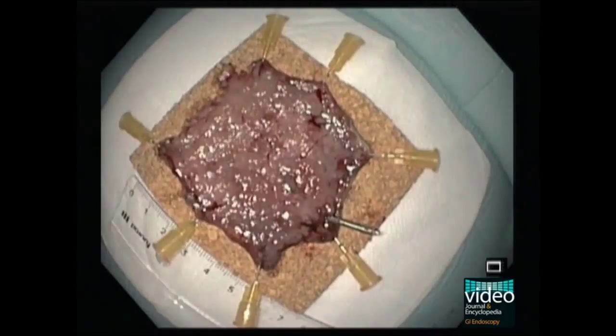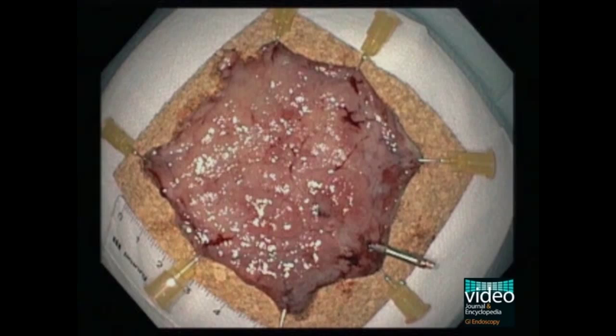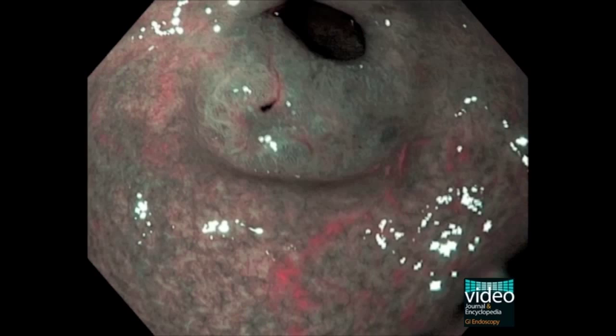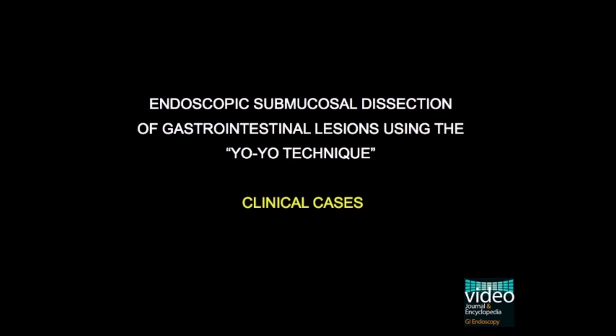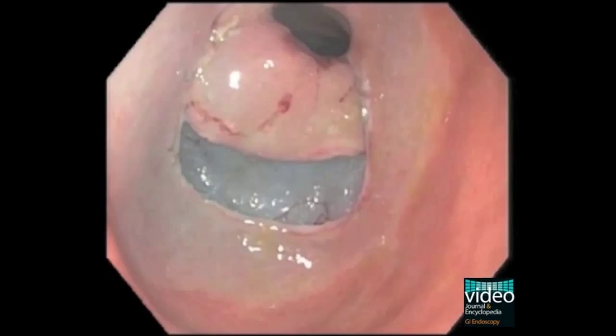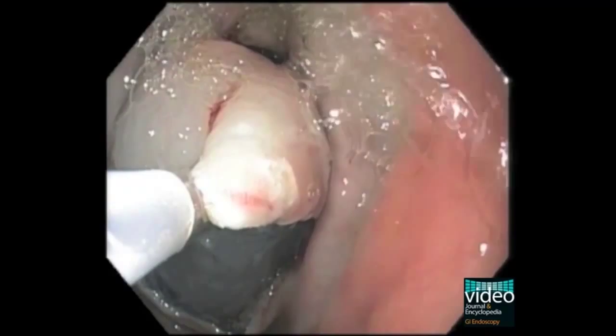The presence of the clip in the specimen permits a precise anatomico-pathological orientation. Now some cases using the yo-yo technique in different contexts are presented. This is a case of a patient with a dysplastic lesion in the pylorus. In this region, there is a tendency for the partially resected specimen to curl, hiding the submucosal space or to move inside the duodenum, hampering access to the distal luminal side.